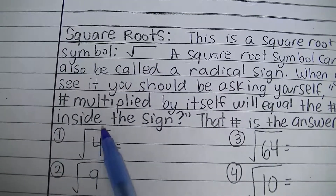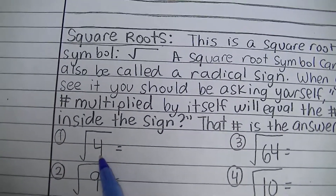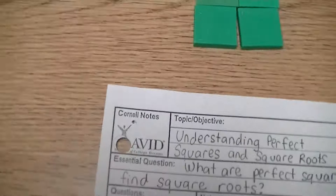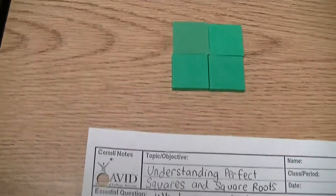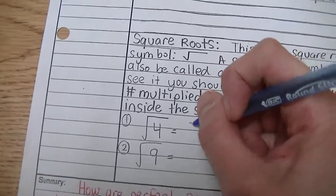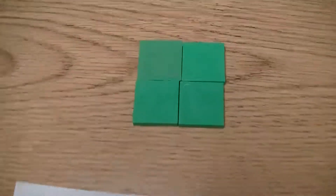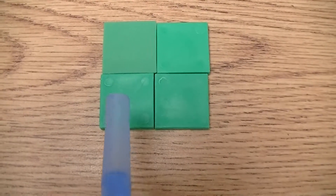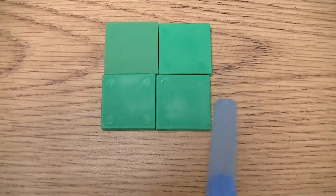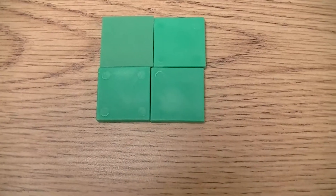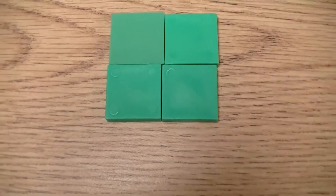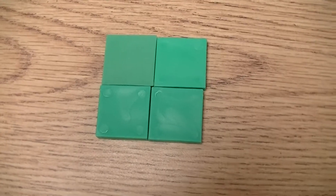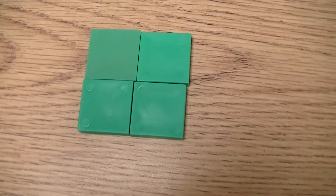So right here I have the square root of 4. What is the square root of 4? I've built it right over here. The square root of 4 is 2. Think about how I got 2 — here's 4, which is a perfect square because it forms a perfect square when you build it out of uniform tiles that are the same size and shape.